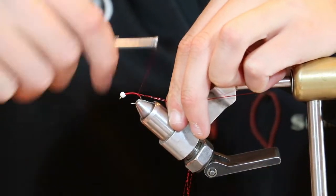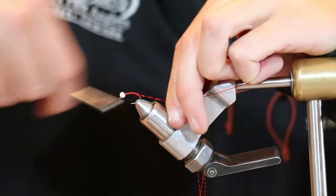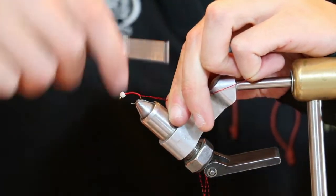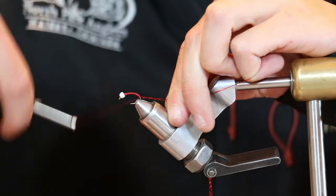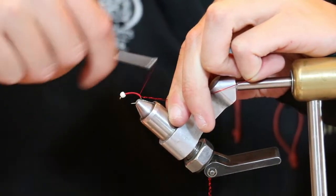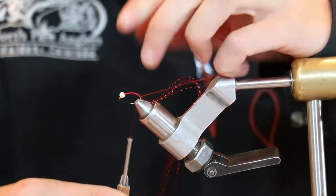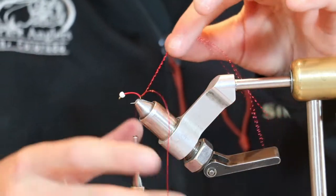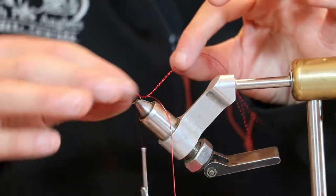And the whole idea behind making those even wraps like that is it'll create a nice even flat underbody which will help wrap that crystal flash. So once you have that tied in, I like to leave my thread hanging at the back here.